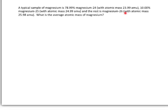So we're not given that value explicitly, but all we have to do is take 100%, subtract the percentages of the other two, and what we're left with is the percentage of magnesium-26.